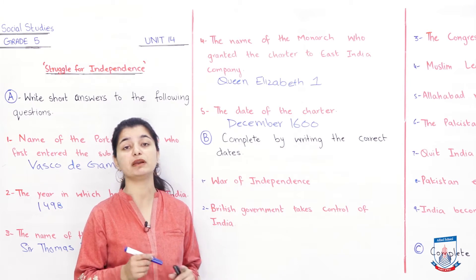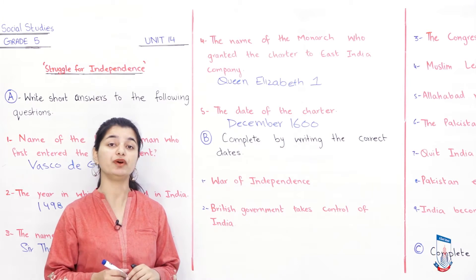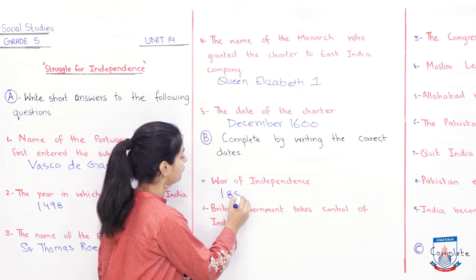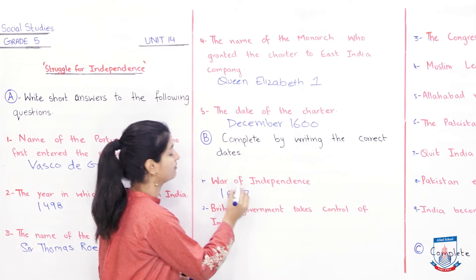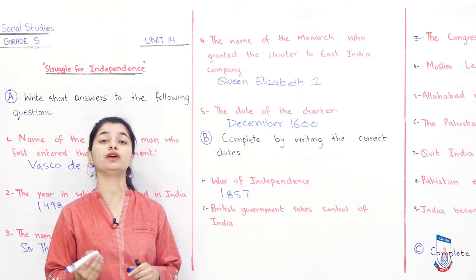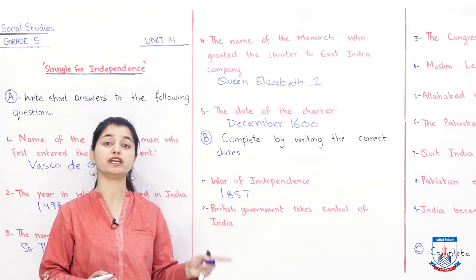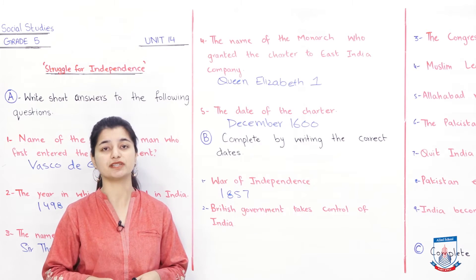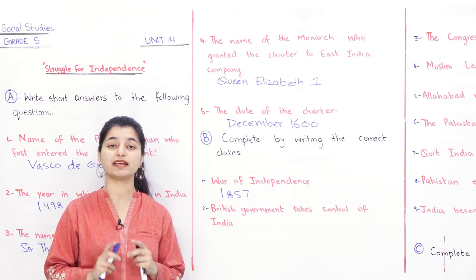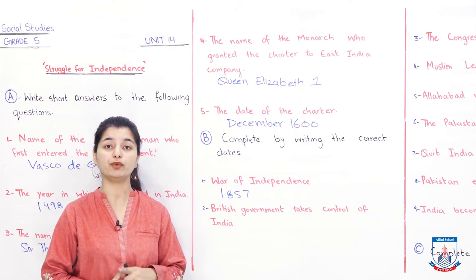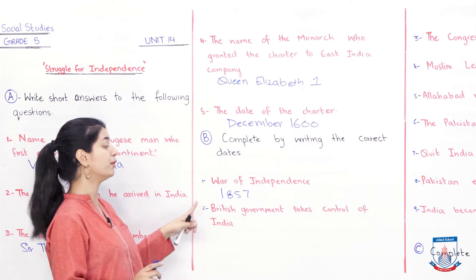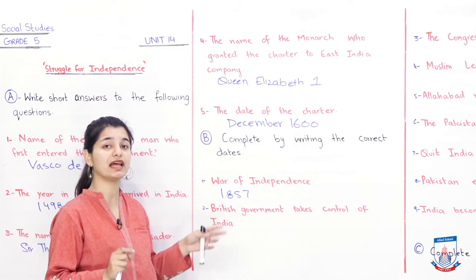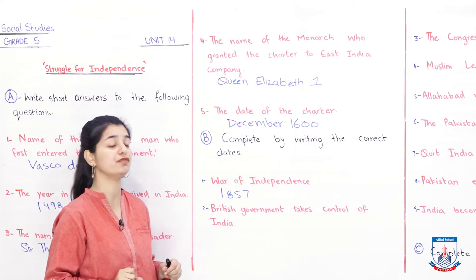War of Independence — what was the date? It was 1857. Why did it happen? It was because of the greased cartridges that British officers forced Indian soldiers to use. We have discussed these events before. But here, you are asked the date briefly, and you can mention it in one word: 1857.